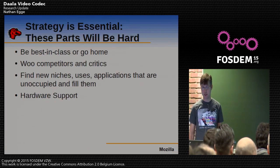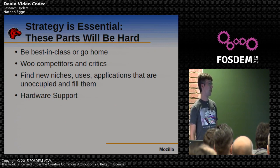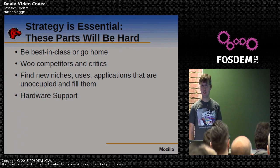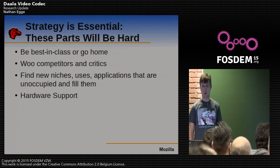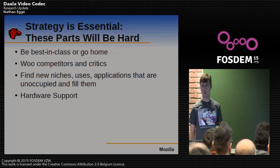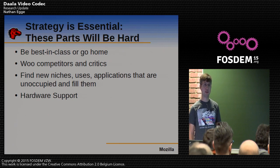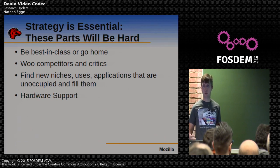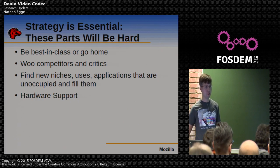There are other parts of the strategy that will be very difficult. We have to be best in all cases — best in compression per bit and bits per watt for the mobile case, good for archive use cases, good for streaming, and good for real-time communication. We have to speak with competitors and critics in other camps. There are great developers working on royalty-bearing codecs, and we want to encourage those people to contribute technology, knowing they can benefit from using it on a royalty-free basis.